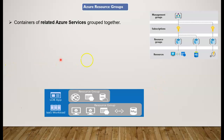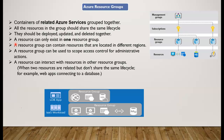A single resource can only exist in one resource group. For example, if I create a VM, I can't place it into multiple resource groups — I must choose only one. Also, resource groups are not tied to a specific Azure region; they can contain resources from any region. All they really are is a way for us to logically group together services that share the same application lifecycle.